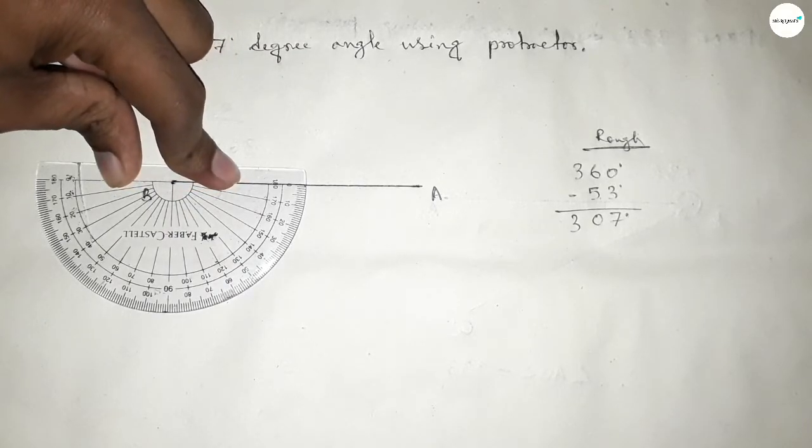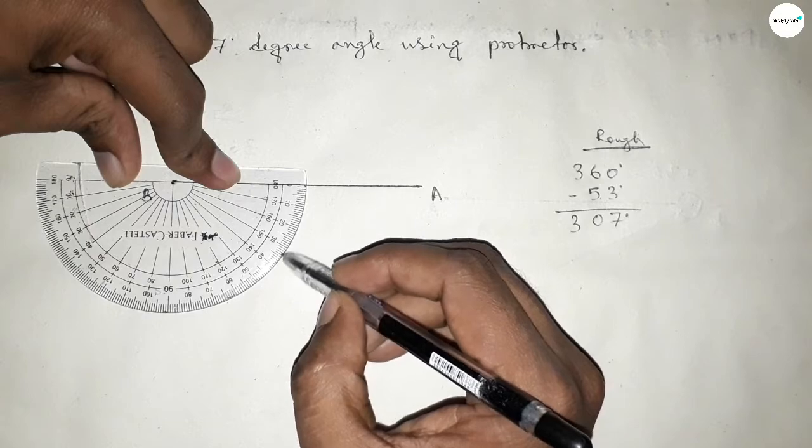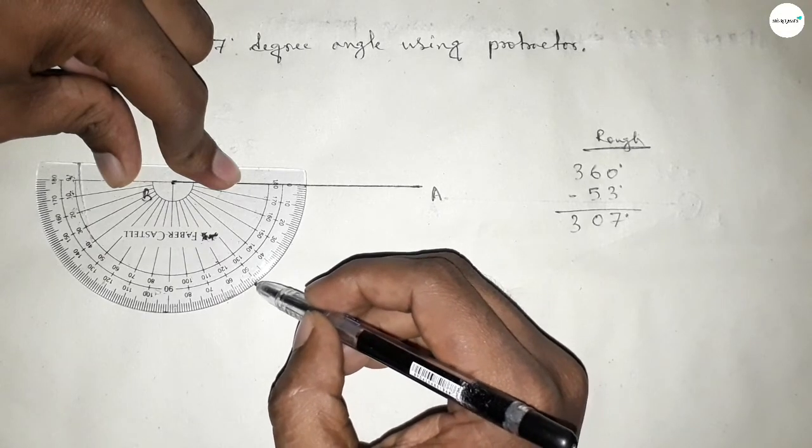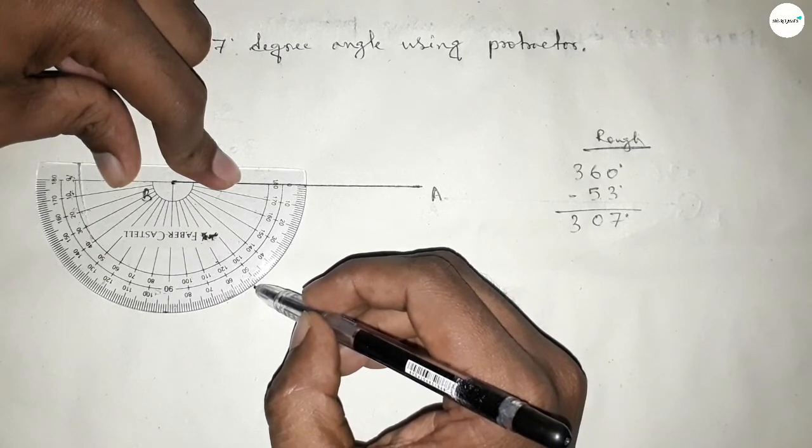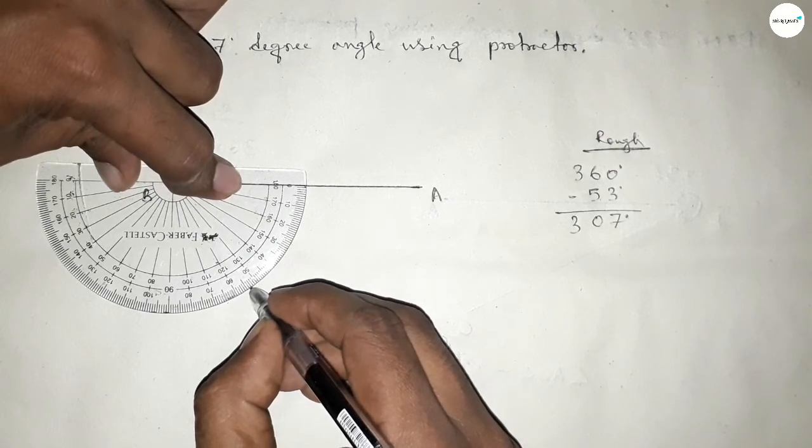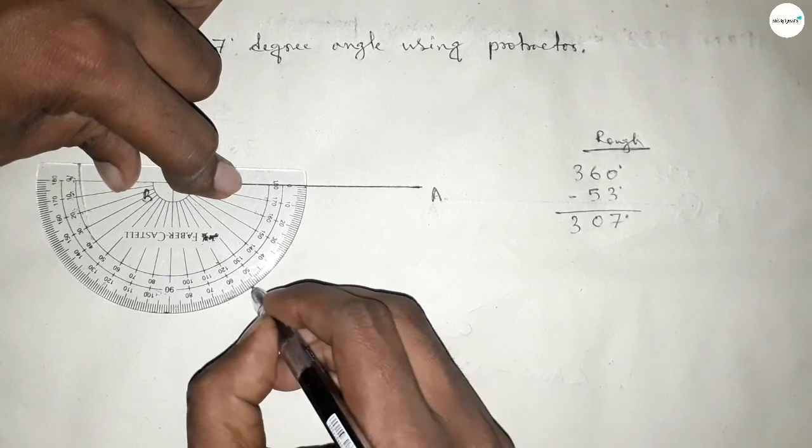So this is 10, 20, 30, 40, 50, 51, 52, 53. So this is 53 degree angle. So if we subtract 53 degree angle from 360 degree then we can get 307 degree.